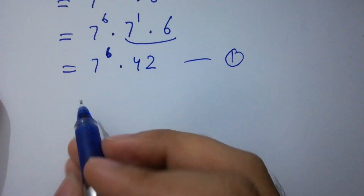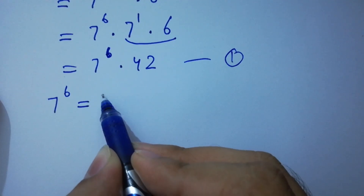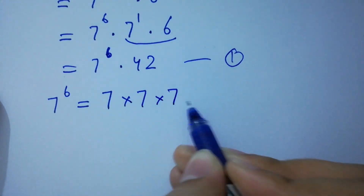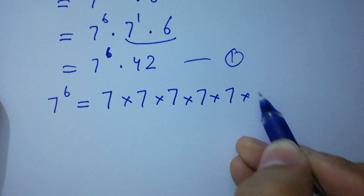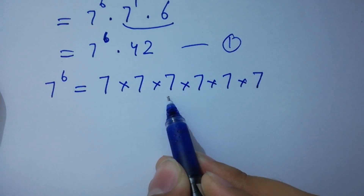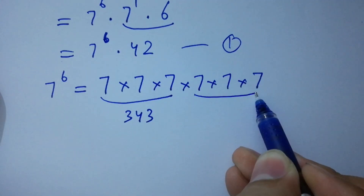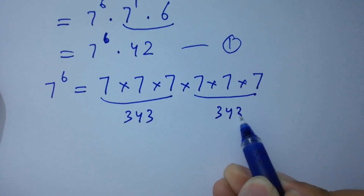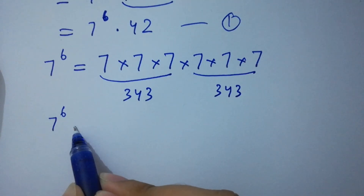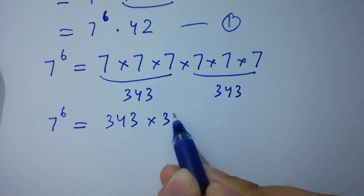First of all I'm going to solve 7 to the power 6, which equals 6 times 7 multiplied together. 7 times 7 is 49. 49 times 7 we have 343, and also 343. So 7 to the power 6 equals 343 times 343.